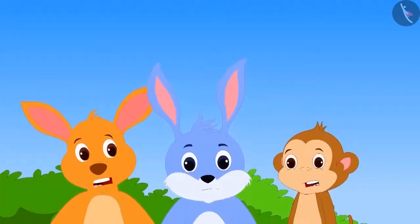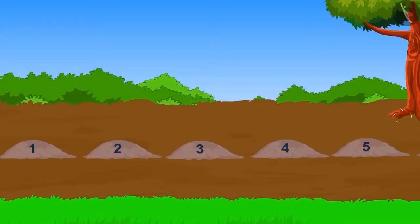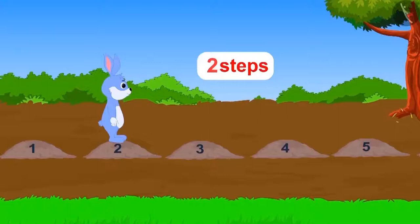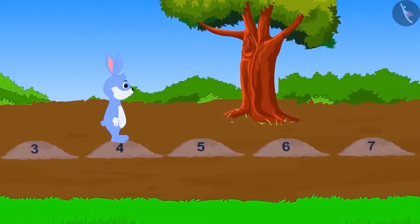First, bunny tried to cross the swamp. He jumped two steps in one jump and reached the second stone. Then he took another jump and reached which stone?